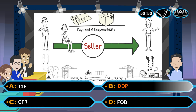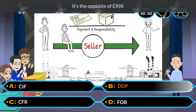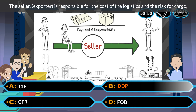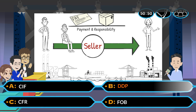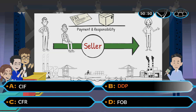The answer is B. DDP. It's the opposite of EXW. The seller, the exporter, is responsible for the cost of logistics and the risk of cargo, from the exporting factory to the importer's delivery location. Therefore, the correct term is DDP.